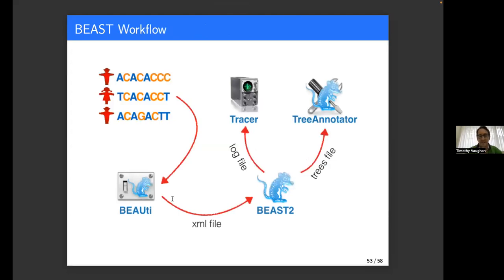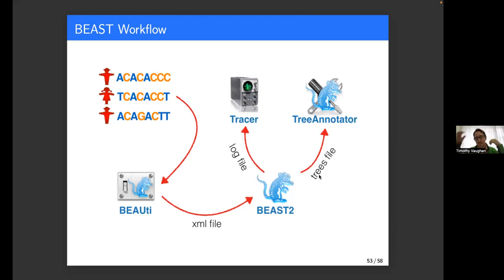These things all fit together in this way: you have your sequence data, you fire up BEAUti, load in your sequence data, set up a model — this produces an XML file containing all the details that specifies the analysis — and you feed that into BEAST2. Usually you'll be running BEAST2 on a cluster if this is a real production analysis because this MCMC process can take a while. Once BEAST2 is complete, it produces a log file containing sampled parameter values and also a trees file which is a log file just for the phylogenetic trees. These are then fed into the appropriate programs for analysis.